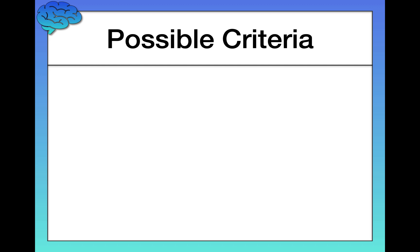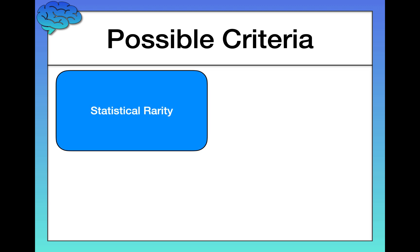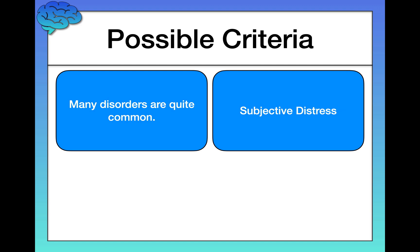Several different criteria have been proposed throughout the years, but as we'll see, there are problems and limitations with each when taken by themselves. For example, one criterion is statistical rarity — if something is unusual, maybe it's disordered. But as we've discussed, many disorders are quite common, so this alone probably isn't sufficient. Second, what if the disorder causes subjective distress? This is a good one, but some symptoms of certain disorders can feel good — still very disruptive, but not subjectively distressing in the moment. For example, mania, which we'll talk about in a future video.